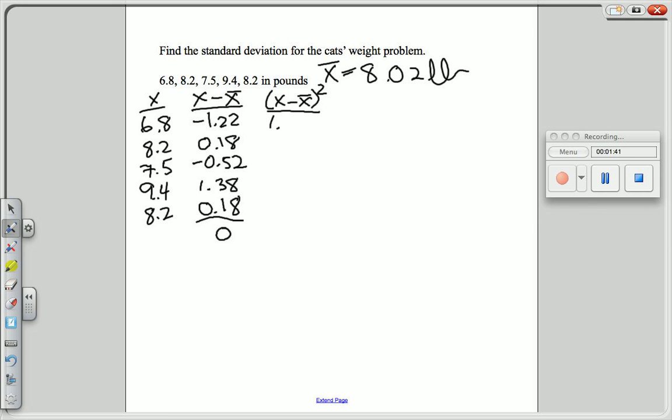If you square negative 1.22, you get 1.4884. If you square 0.18, you get 0.0324. You will notice I'm keeping lots of decimal places. This reduces rounding errors. If you square negative 0.52, you get 0.2704.